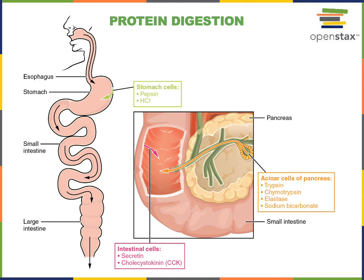Carboxypeptidase is formed from the precursor procarboxypeptidase and is activated by trypsin. This enzyme catalyzes the hydrolysis of peptide bonds at the C-terminus of a peptide — the carboxyl end — removing one amino acid at a time from the C-terminal end of a polypeptide.